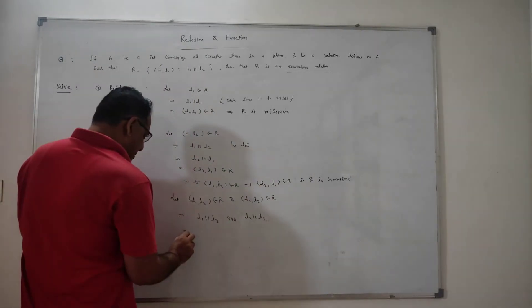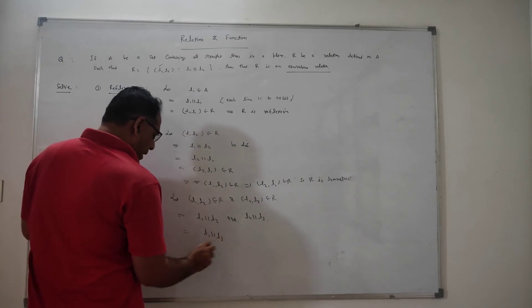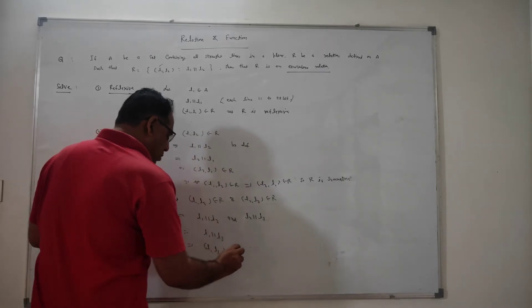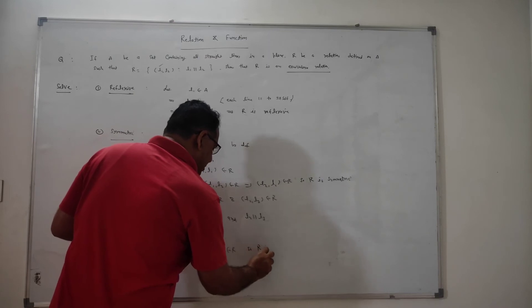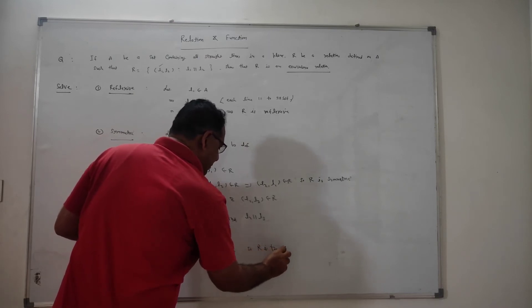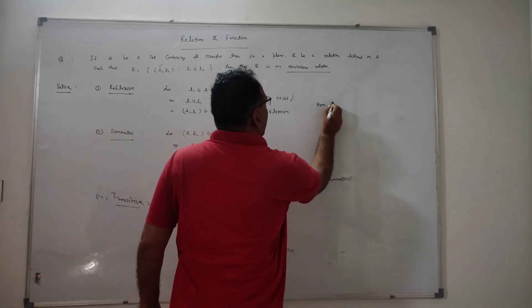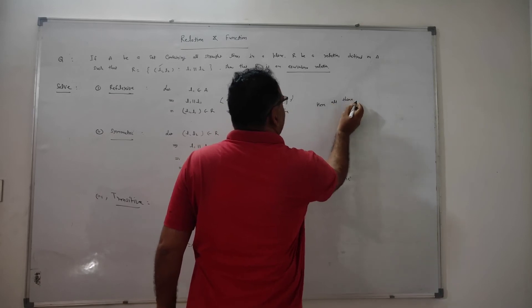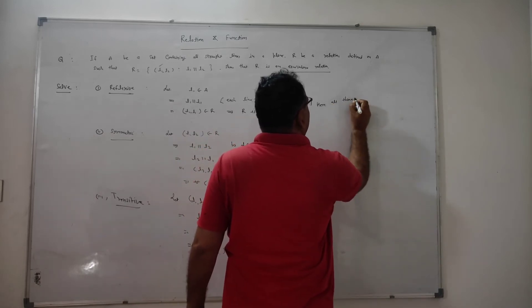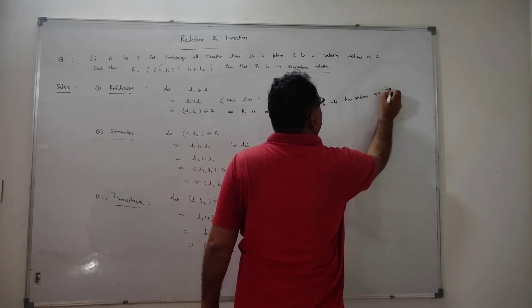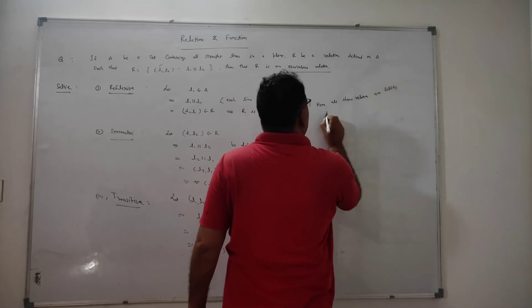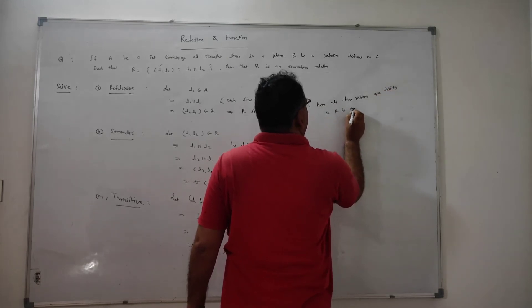That means this implies that L1 is also perpendicular to L3. This implies that (L1, L3) is an element of R. Here, all three properties are satisfied. So R is an equivalence relation.